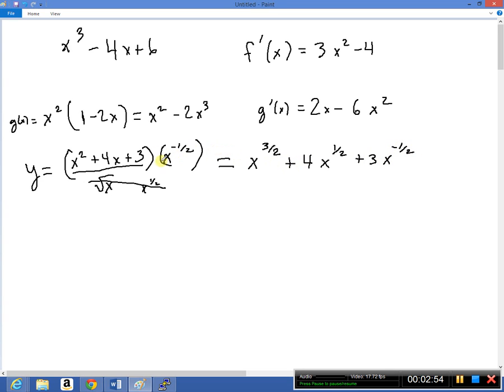Now this is just a little bit of algebra. You could get here another way. You could split it into 3 fractions: x squared over the square root of x and 4x over the square root of x and 3 over the square root of x, and then change the square root of x to x to the 1 half and then subtract the exponents and you're going to end up in the same place.